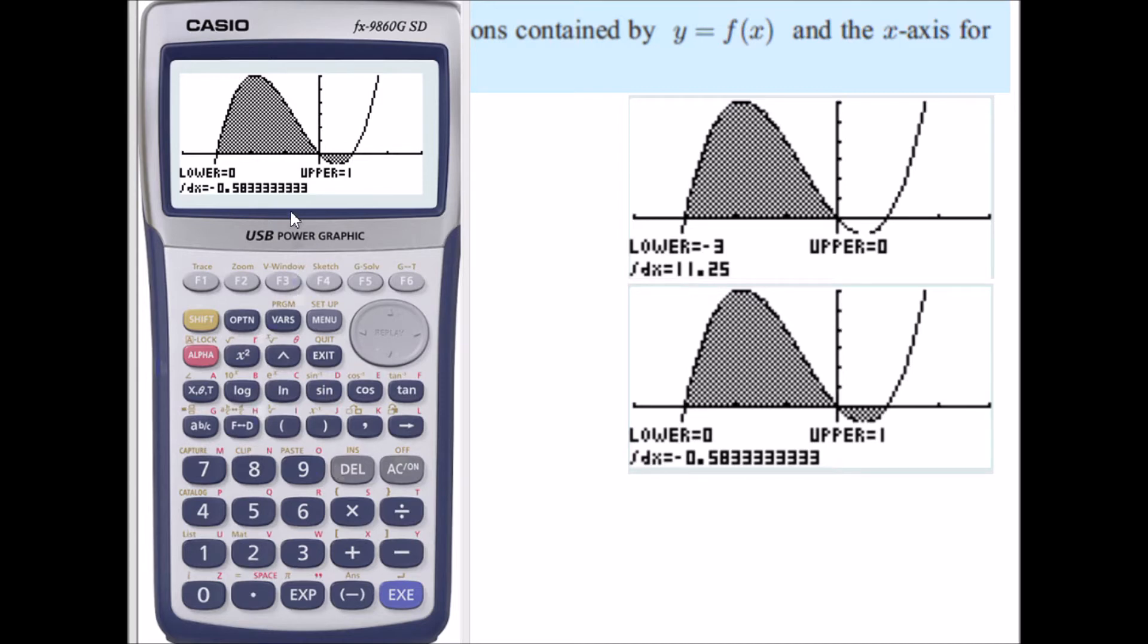If I were to work out the definite integral between negative 3 and 1, you'll see we won't get that. So once again G-solve, F3, my lower boundary of negative 3 and my upper boundary here of 1. And we get 10.6 not 11.2 plus 0.6. That would not be the area between the polynomial and the x-axis.